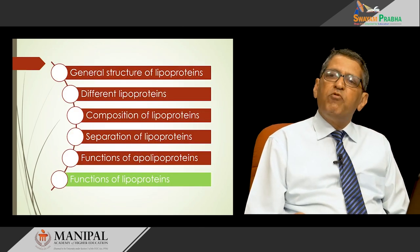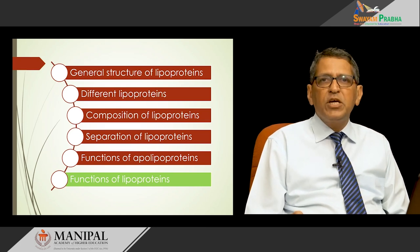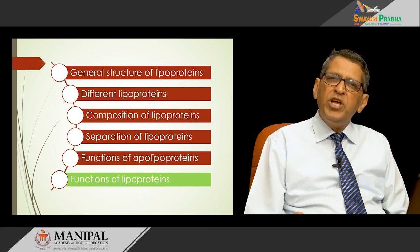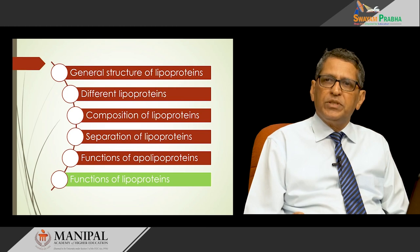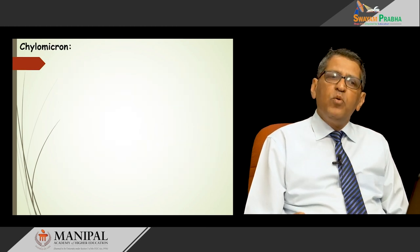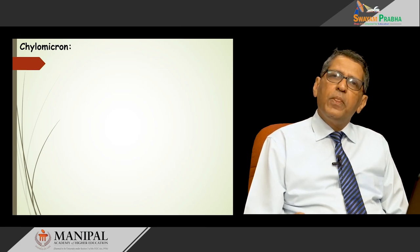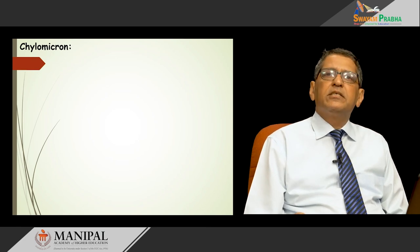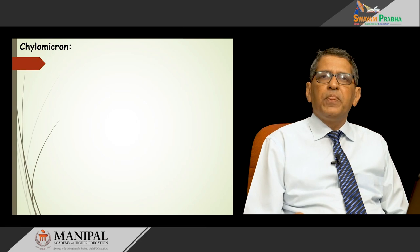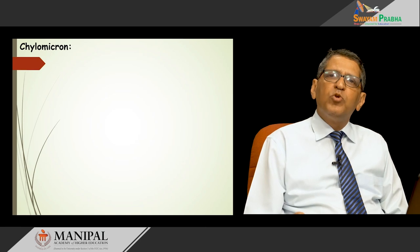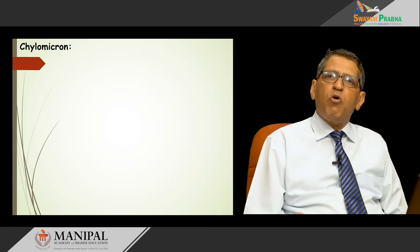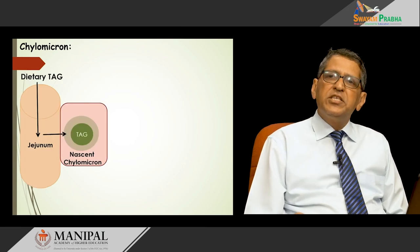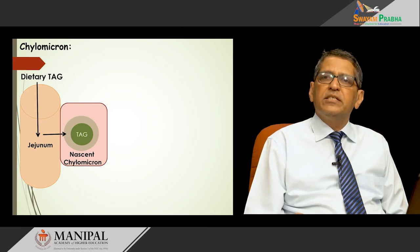Moving on to the functions of lipoproteins, we will briefly discuss the metabolism of each. Chylomicron has the highest concentration of triacylglycerols, the least density, remains at the origin during electrophoresis, and at the top during ultracentrifugation. It is synthesized as nascent chylomicron in the small intestine, specifically the jejunum, where dietary triacylglycerol is incorporated.